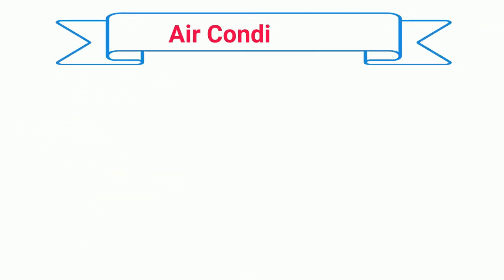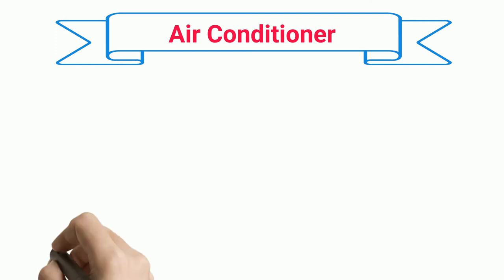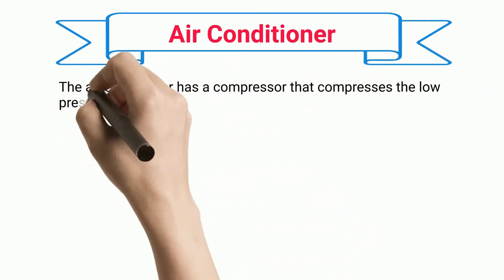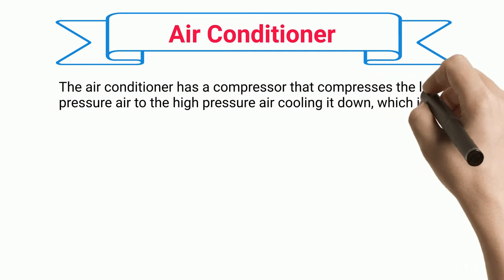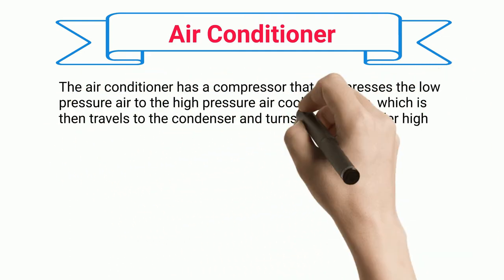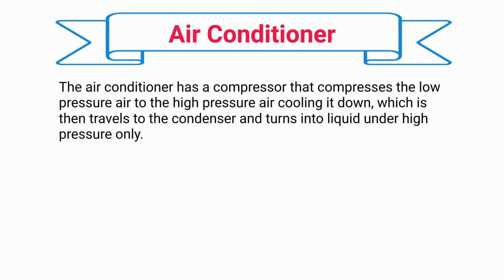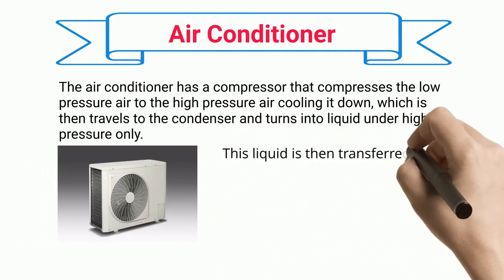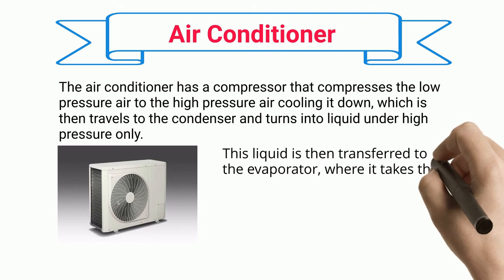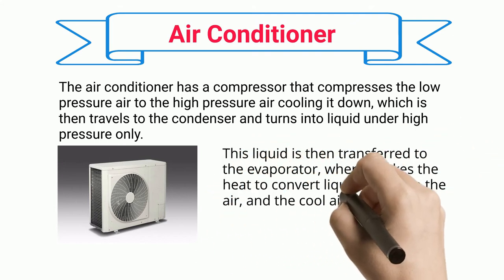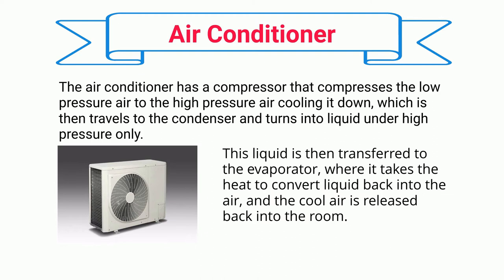Air conditioner: the air conditioner has a compressor that compresses low-pressure air into high-pressure air, cooling it down. This then travels to the condenser and turns into liquid under high pressure. The liquid is then transferred to the evaporator, where it takes in heat to convert back into air, and the cool air is released into the room.